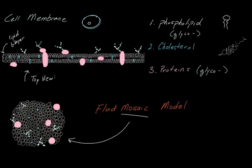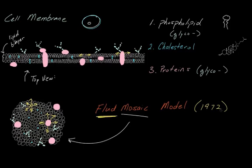But why did we call it fluid? The reason we call the cell membrane fluid is because these pieces in our cell membrane can actually move around — they're not set in stone. The proteins and phospholipids in our cell membrane can move around. The movement is actually not two-dimensional, just up and down or left and right — it can actually go in a lot of different directions. Our proteins can move all around the cell membrane, and so can our phospholipids. This is what we call the fluid mosaic model, and as a fun fact, this was only really discovered in 1972.